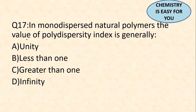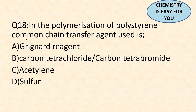Question 17: in monodispersed natural polymers, the value of the polydispersity index (PDI) is generally equal to one — unity. There are few numerically related questions in polymers; most are chemistry-based or require memorization. For monodispersed natural polymers, the polydispersity index equals 1. This is very important to remember.